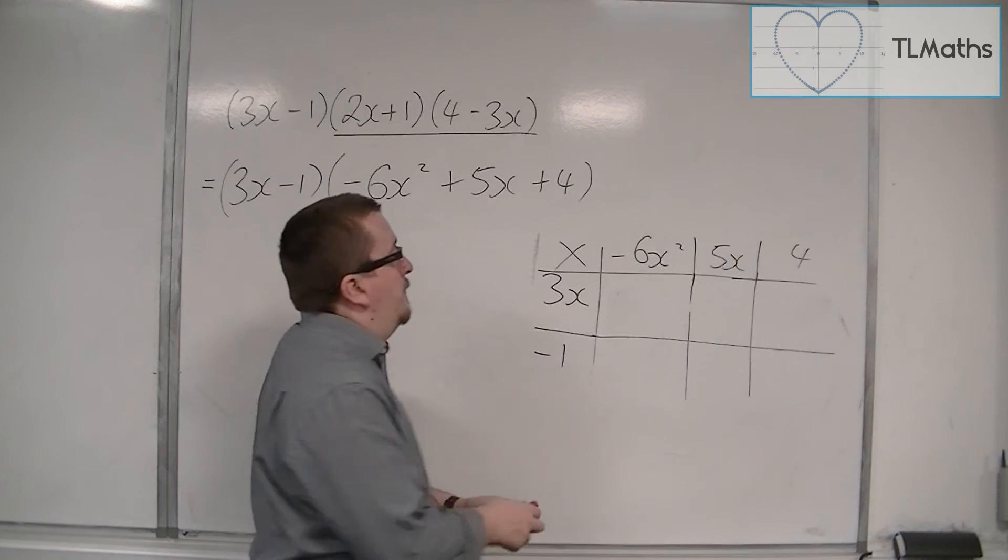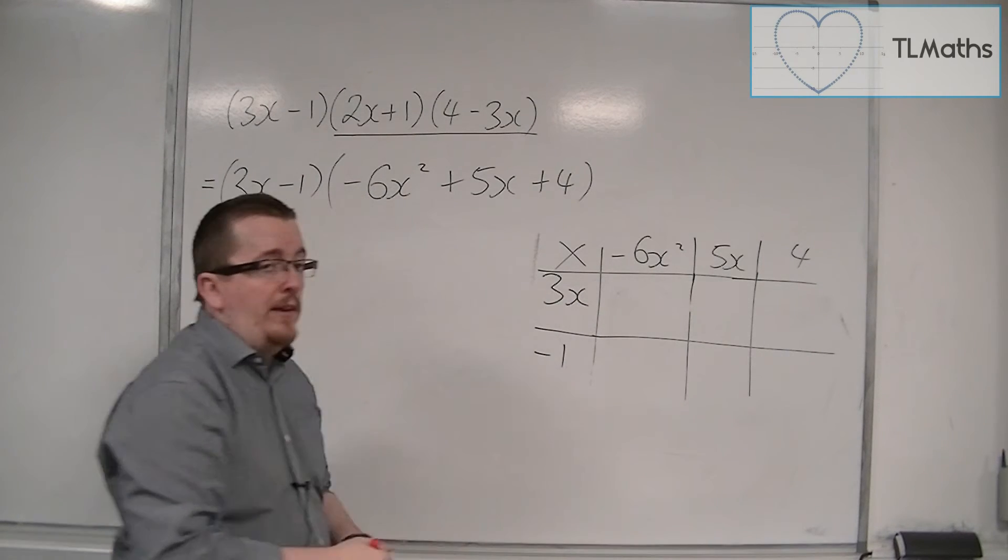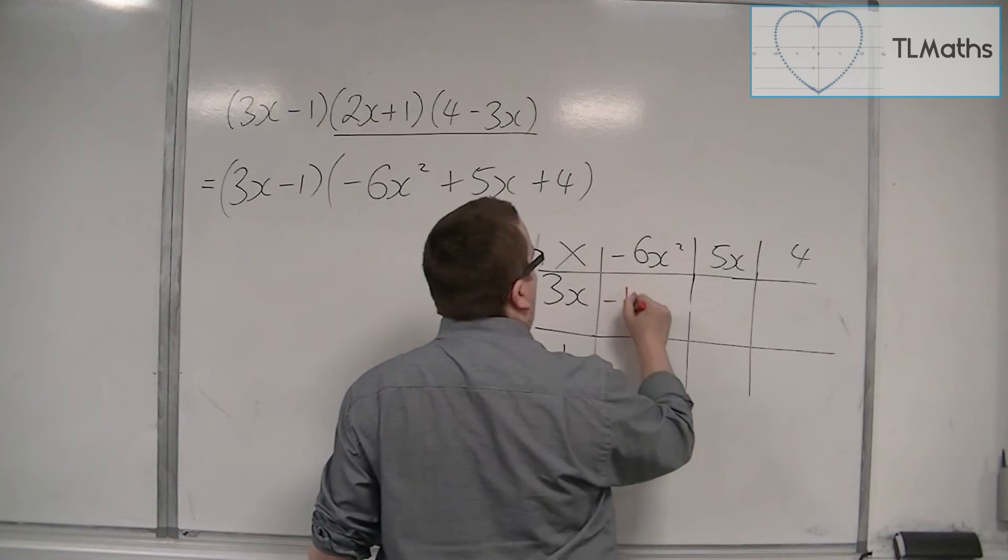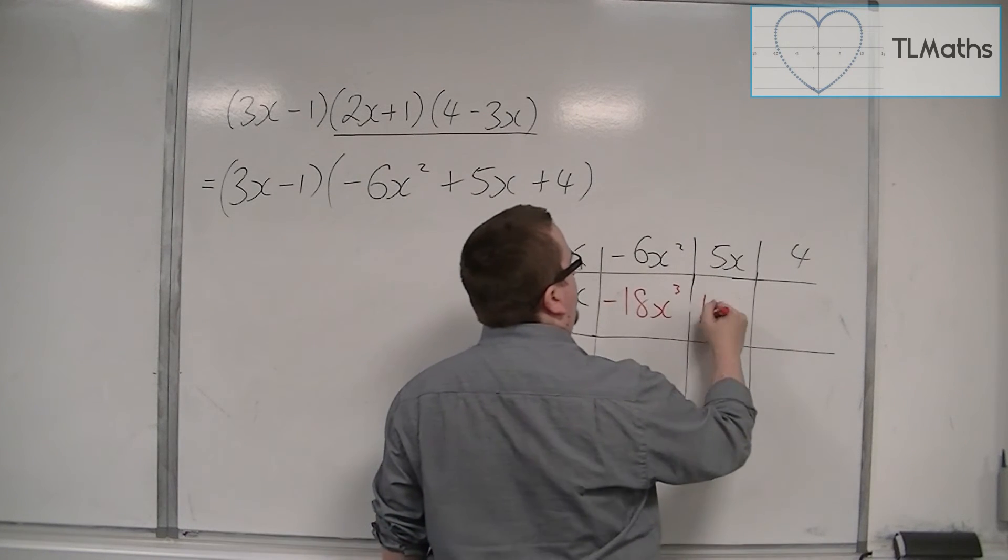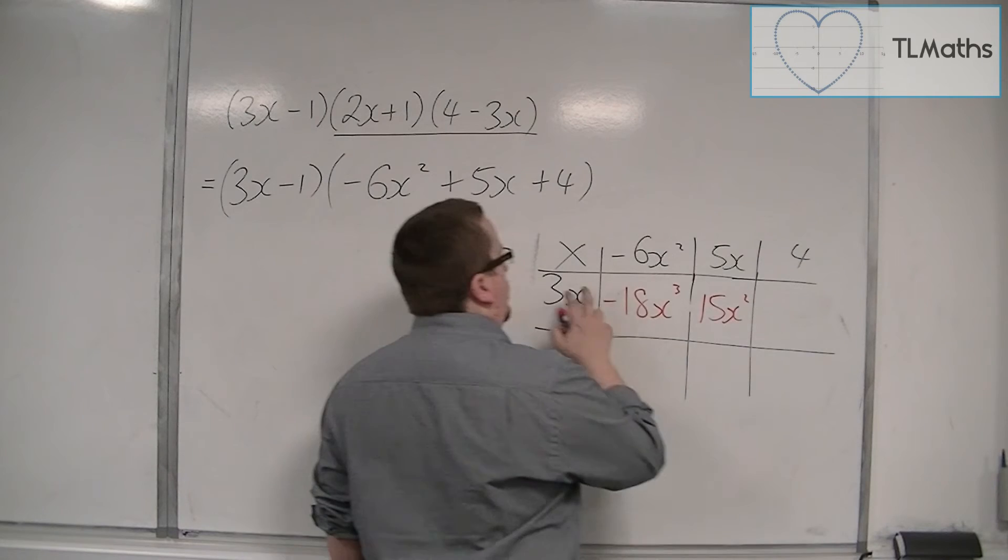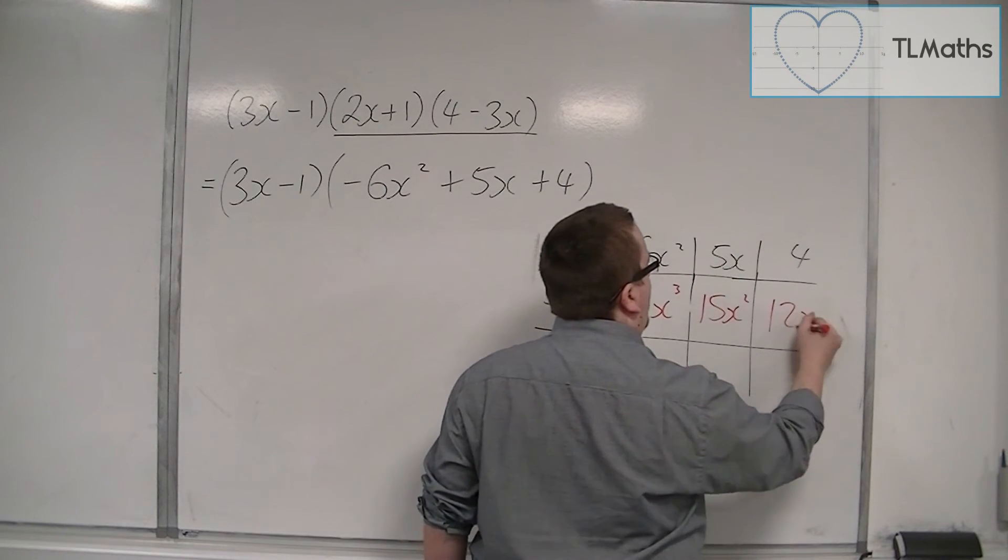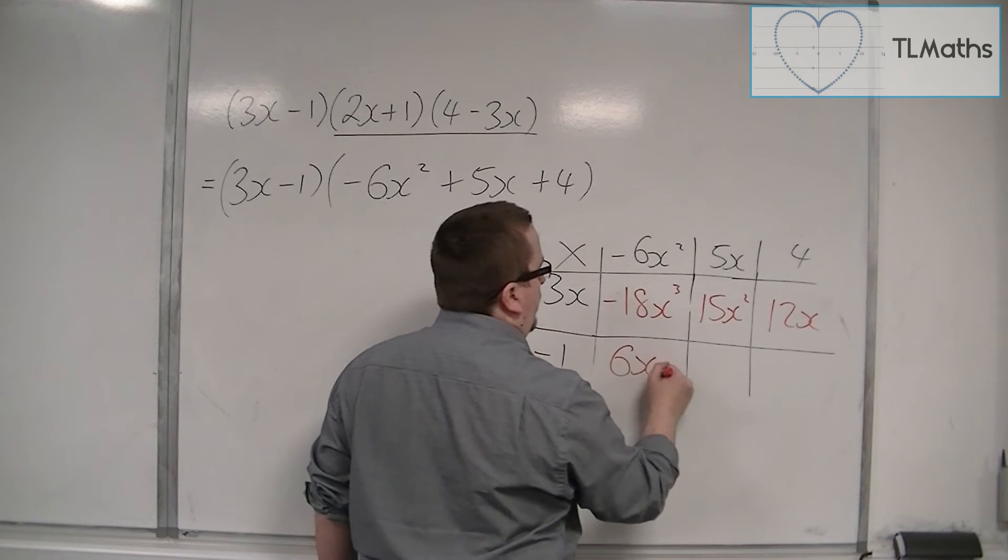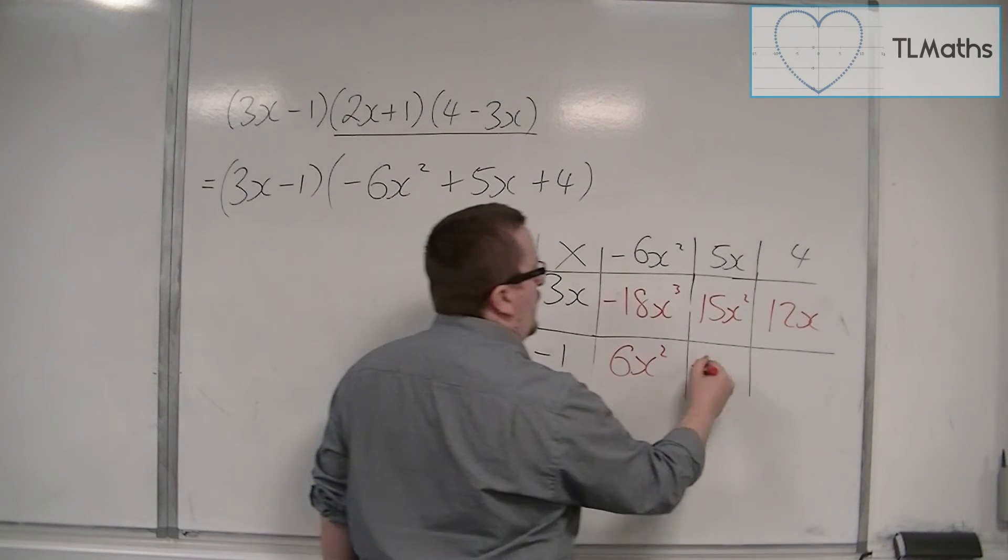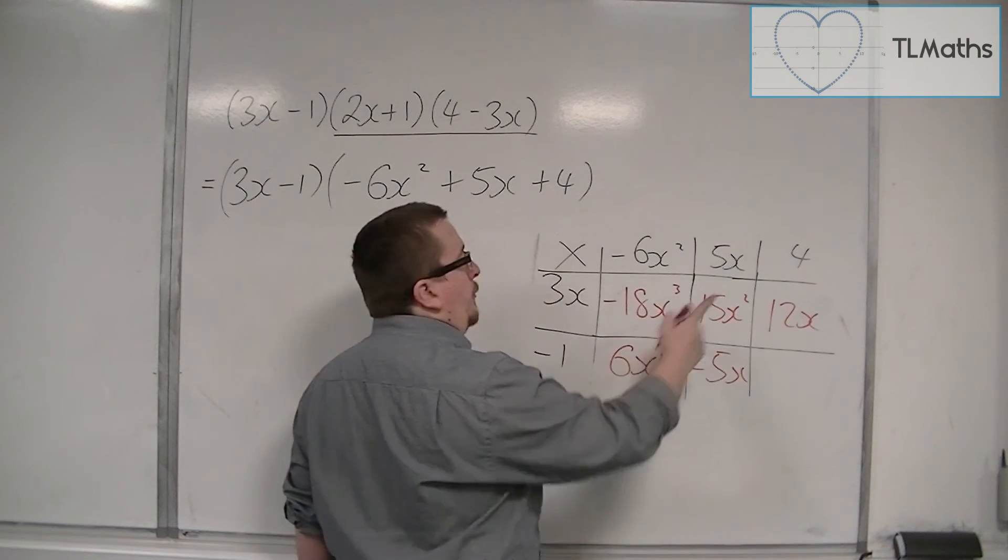So we have 3x times minus 6x squared, so that's minus 18x cubed. 3x times 5x, so 15x squared. We've got 3x times 4, so 12x. Minus 1 times minus 6x squared, so 6x squared. Minus 1 times 5x. And then minus 1 times 4.